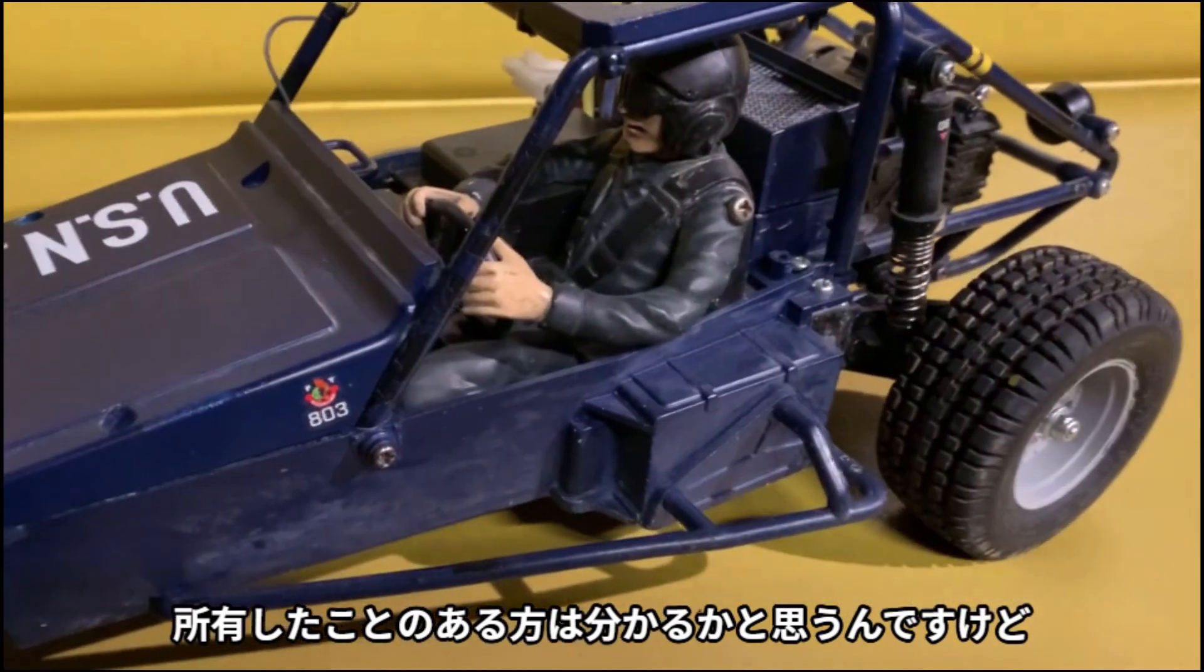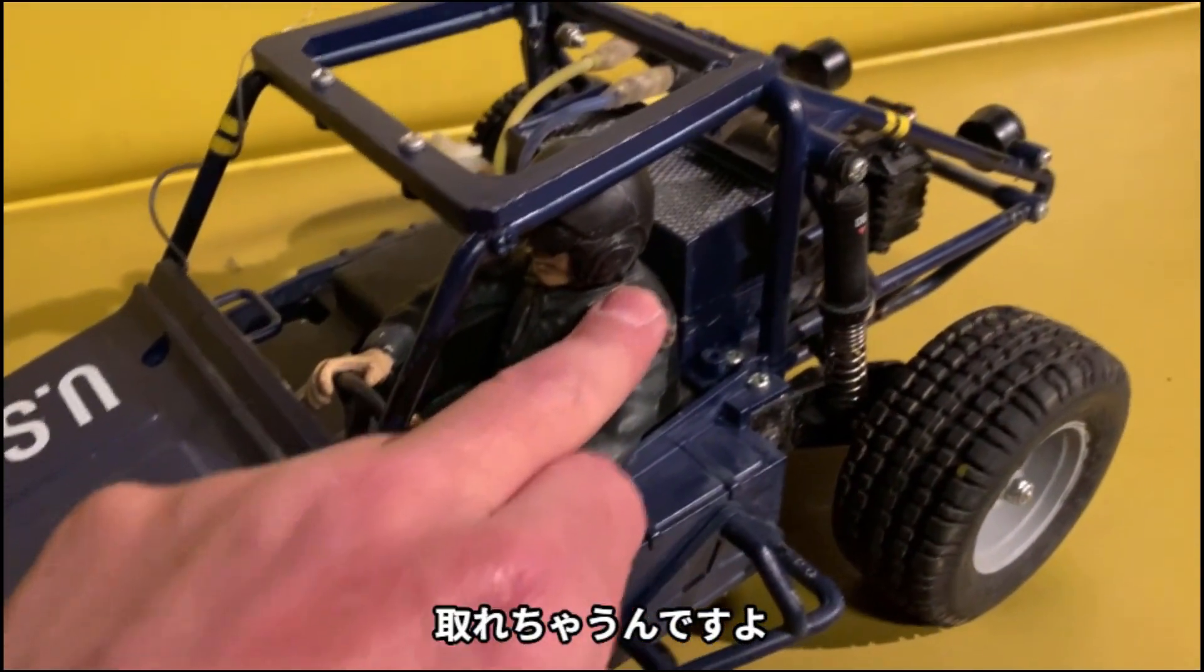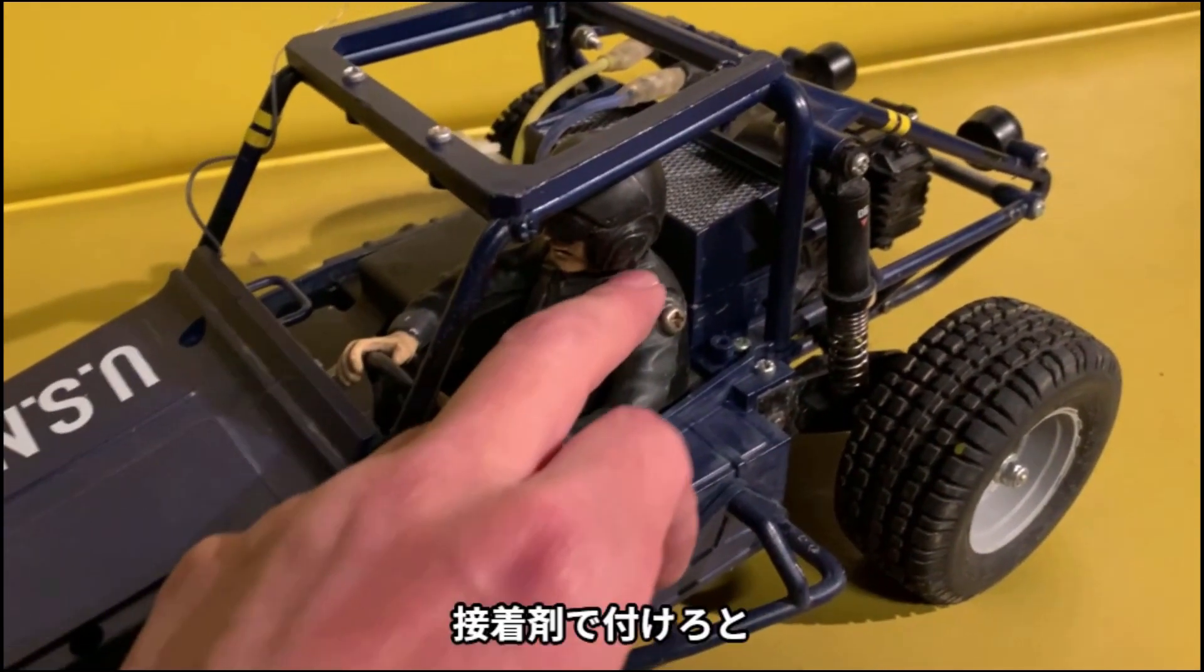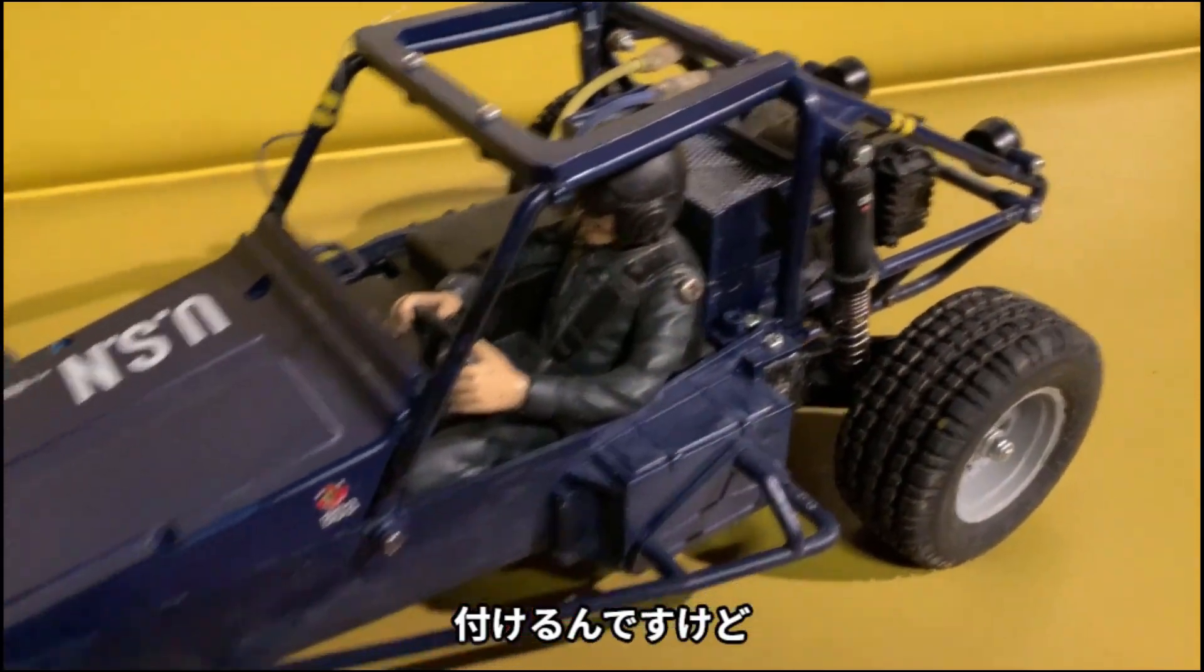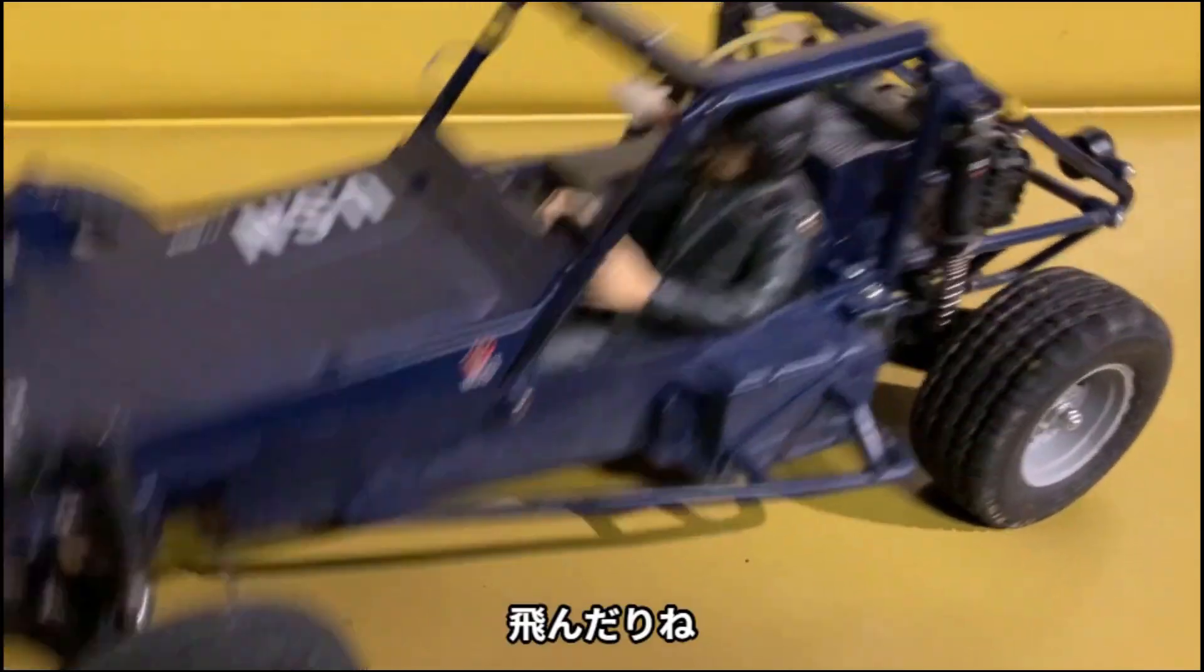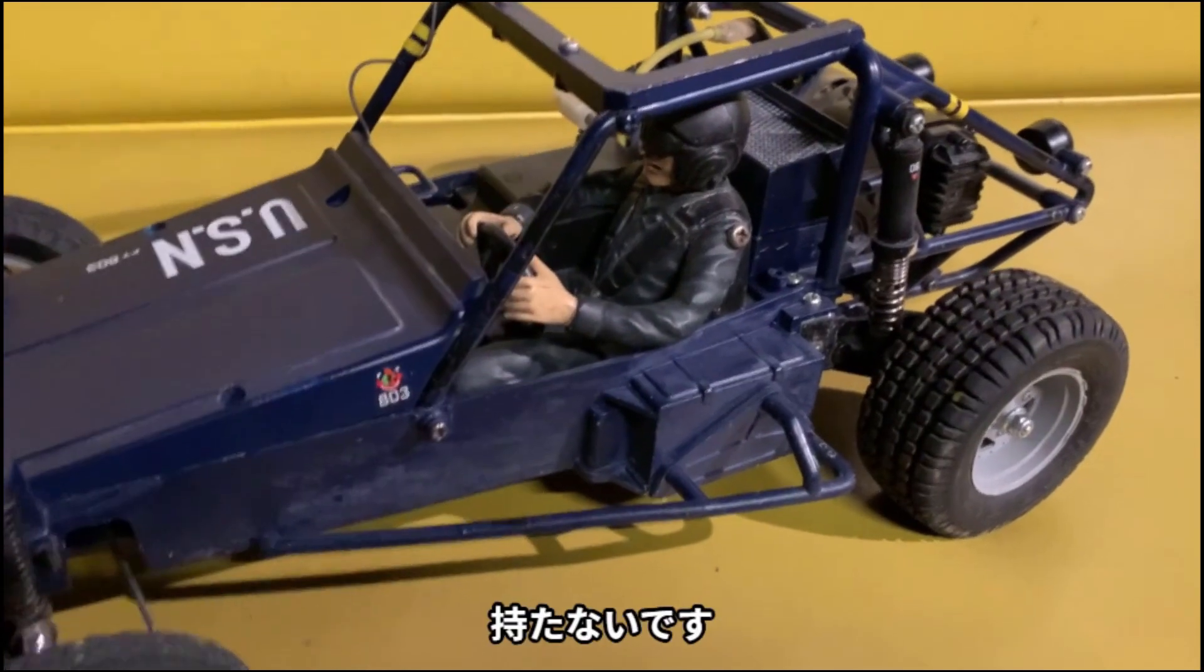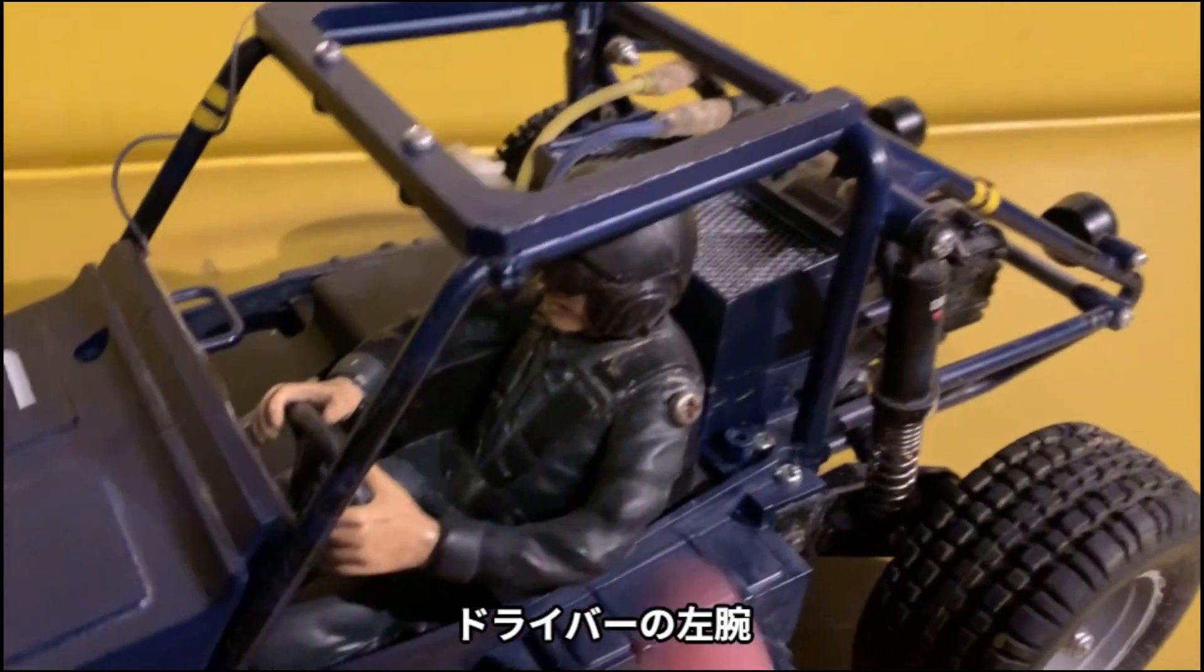このバギーを所有したことのある方は分かるかと思うんですけど、左腕が取れちゃうんですよ。そもそもの設定が接着剤でつけろということでつけるんですけど、まあバギーですから飛んだりね、アクロを走るわけなんで持たないです。